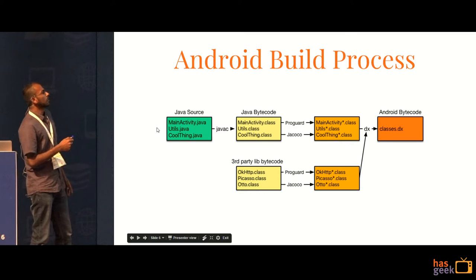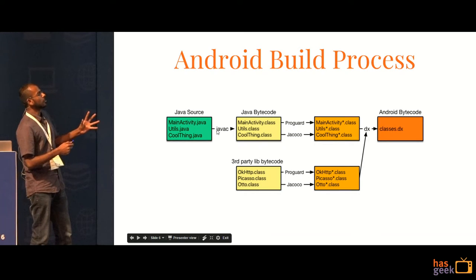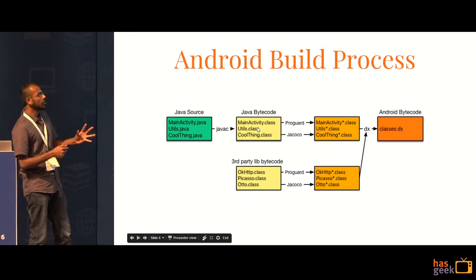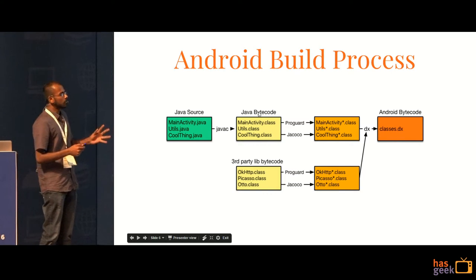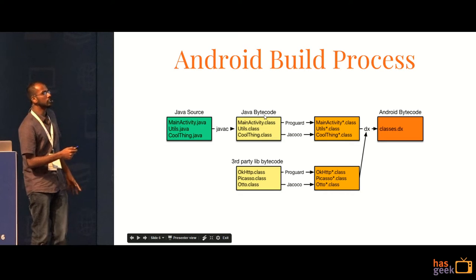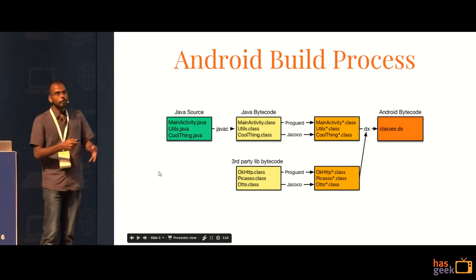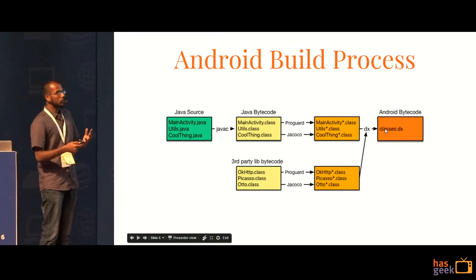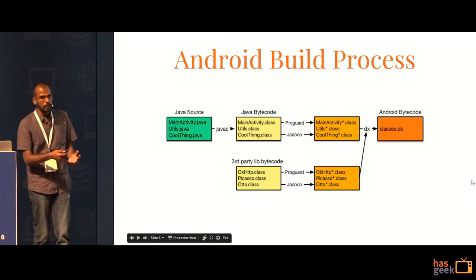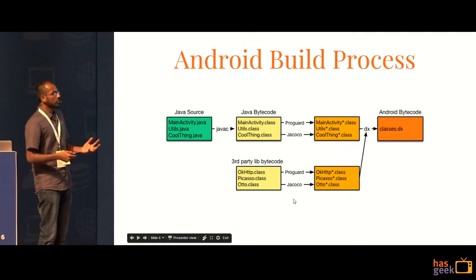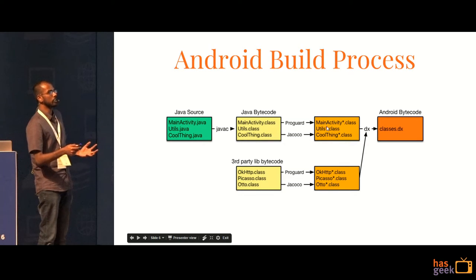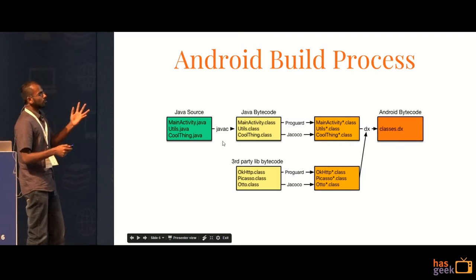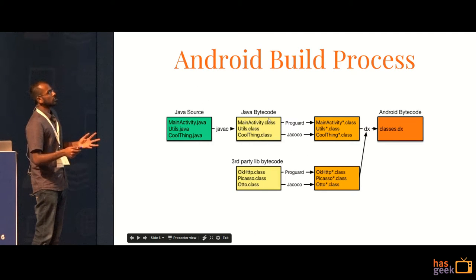This is the current build process. You have your Java source. The Java compiler converts it into Java bytecode. If you are using ProGuard or Jacoco or whatever intermediate bytecode tools, this is where they come in after the Java bytecode has been generated. They convert the Java bytecode into this modified form which is then passed on to the DX tool which gives you your Android bytecode. Any third party libraries that you are using would also come in at this point and they would be passed along with your main classes to the DX tool. As you can see, there are multiple tools involved: the Java C compiler, ProGuard and Jacoco or whatever else you are using, and then DX.